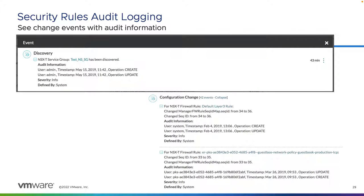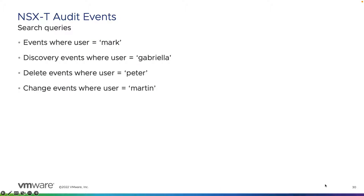We can also utilize vRealize Network Insight to do security rule audit logging. Any time a firewall rule is created, changed, or deleted, it's being tracked by vRealize Network Insight. We can see the username, the timestamp, and what they did — whether it was create or update. We can see which rule or service group, and also see things like configuration changes. Using the search engine within vRealize Network Insight, you can also do searches to look for specific audit events.